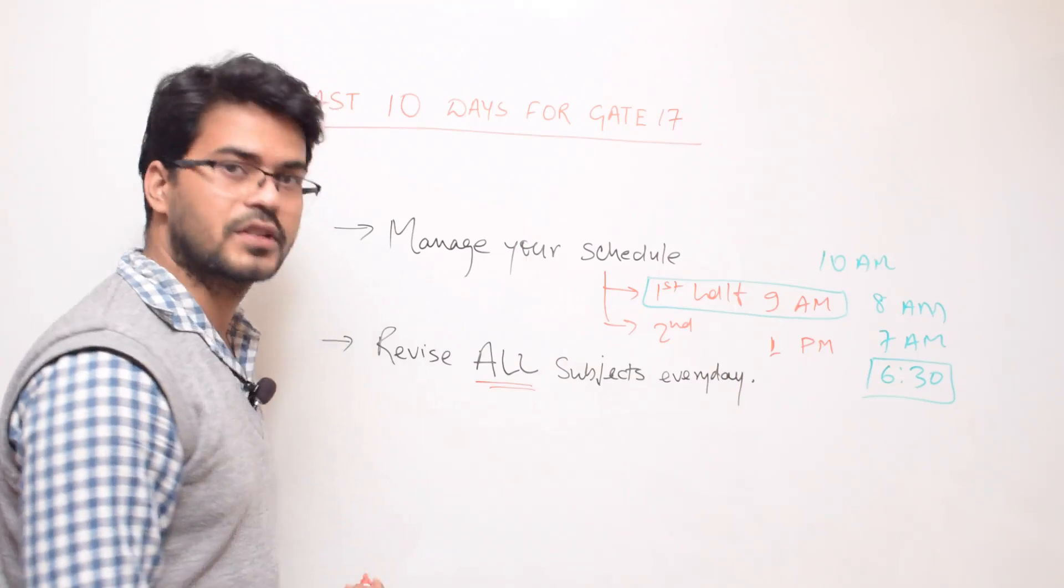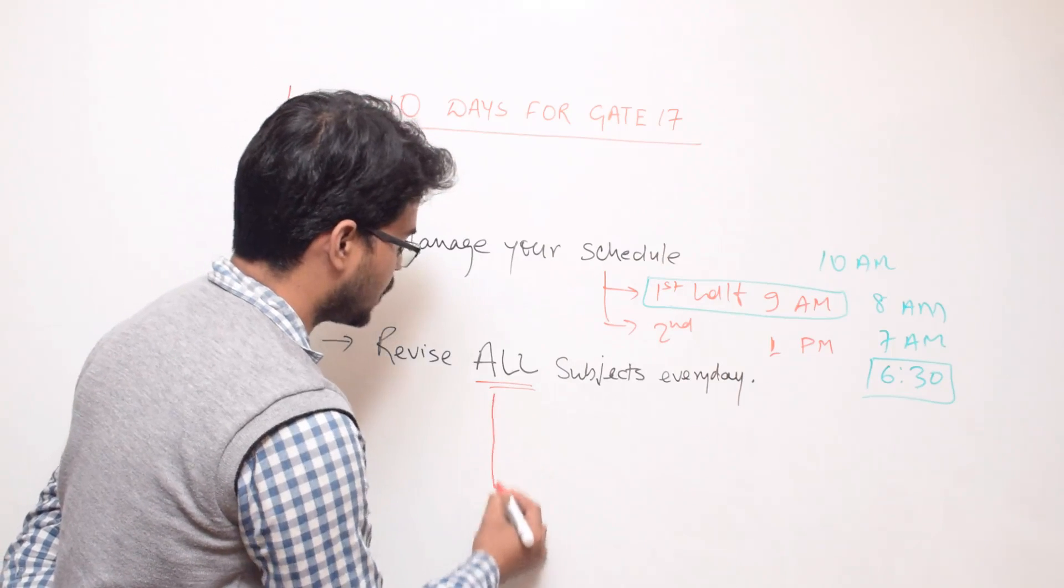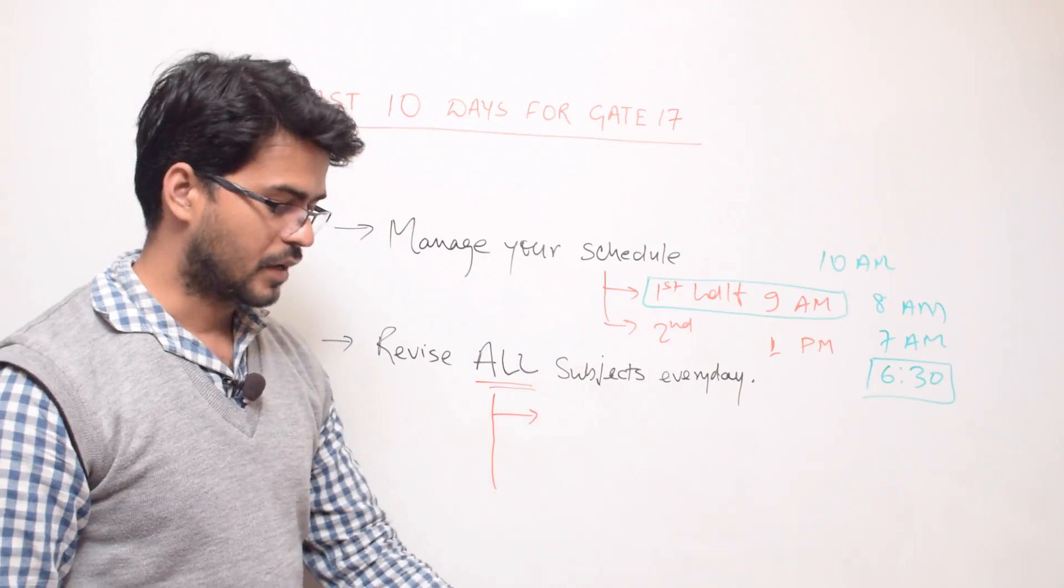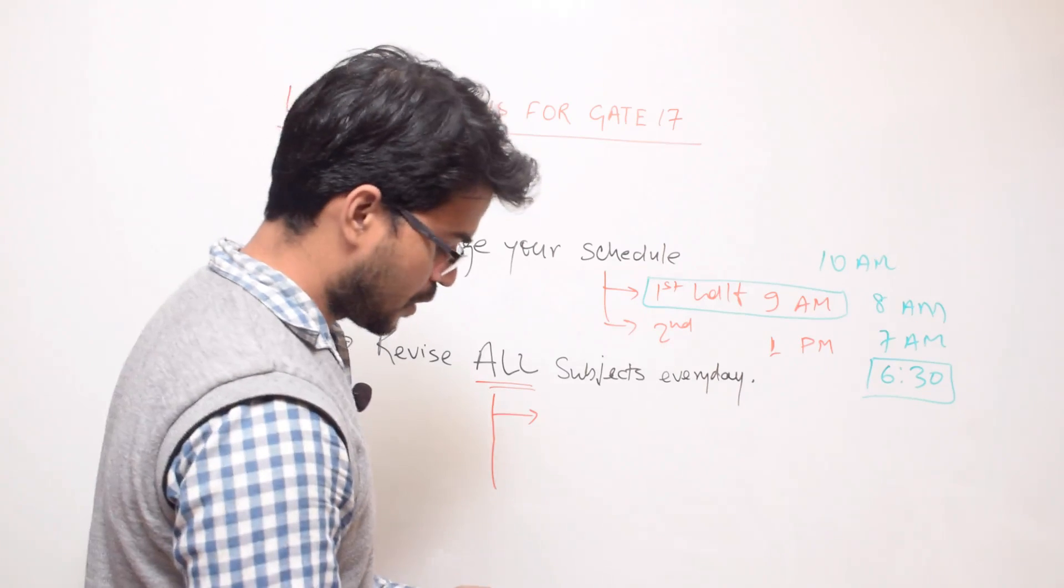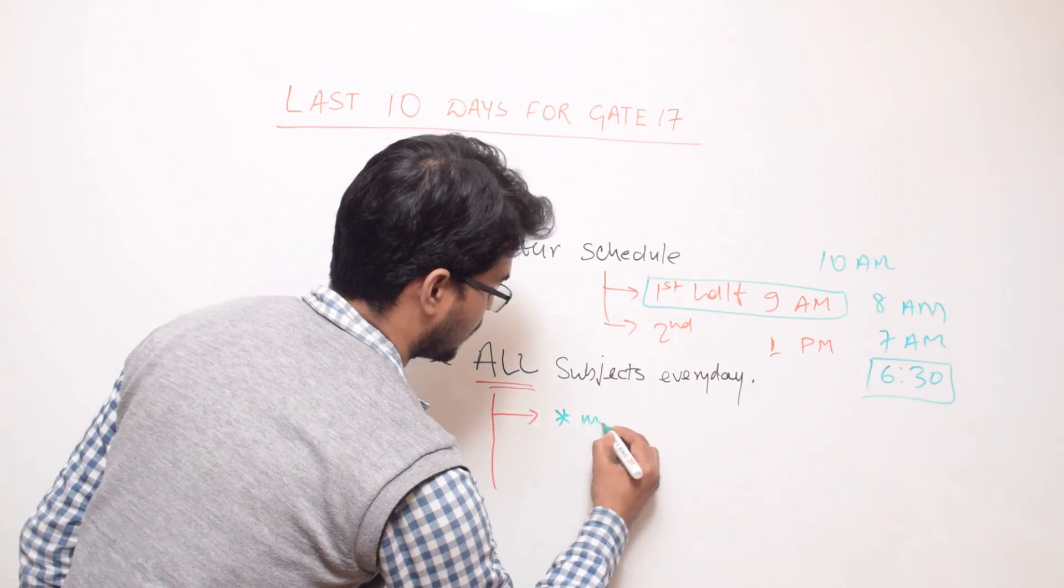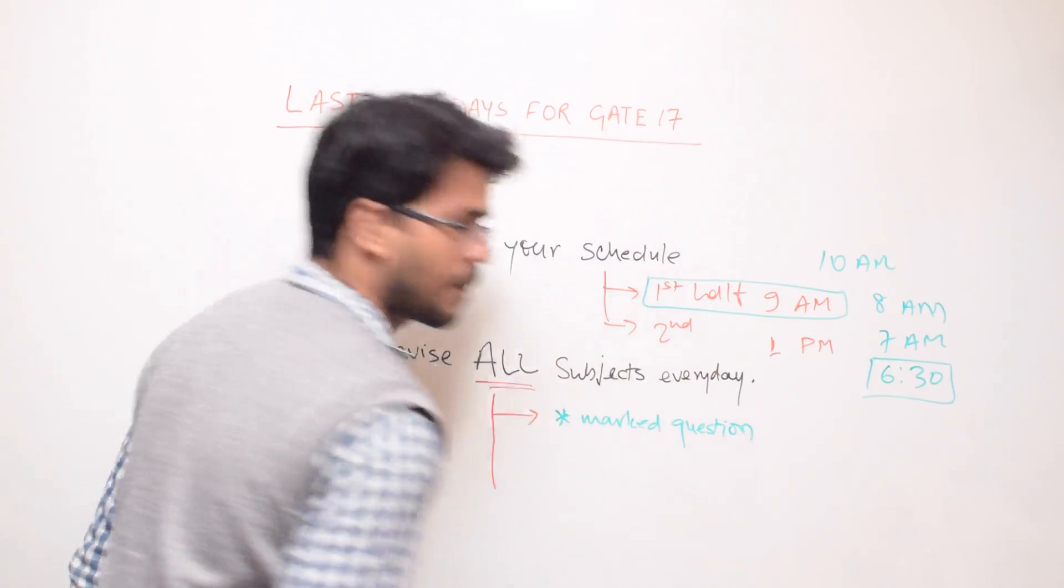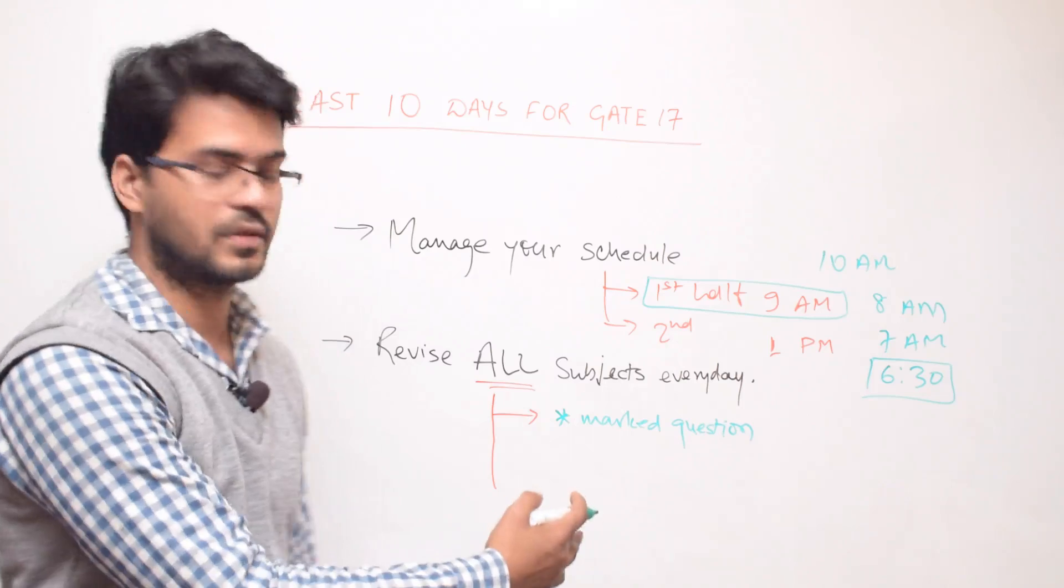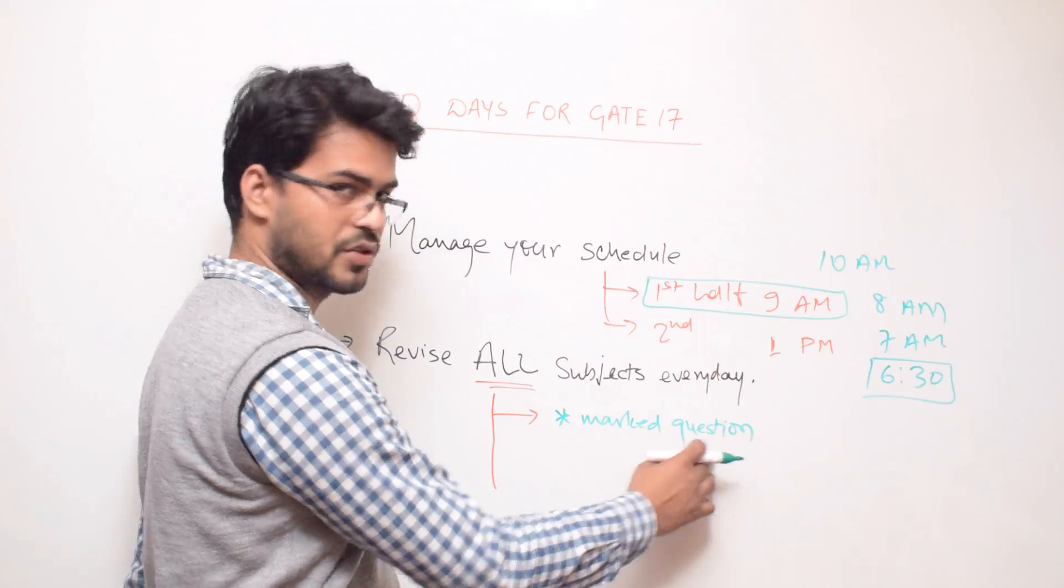Now when we say how to revise all the subjects, you have a number of notebooks prepared so far. What you do is, I have been continuously talking about how you should be preparing yourself for these last remaining days. The first thing would be start solving your star marked questions. So everyone of you I expect have star marked some questions which you were not able to solve in your first attempt or second attempt. Start solving only those questions, solve from each subject.